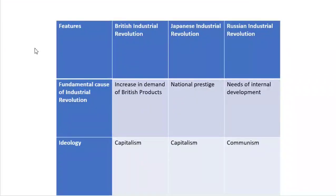The first fundamental feature is the fundamental cause of industrial revolution. In the case of Great Britain, the fundamental cause was an increase in demand for British products. This high demand compelled British manufacturers to use machinery in order to achieve a high rate of production so that supply could meet the rising demand. That is the reason why the industrial revolution flourished in Great Britain.